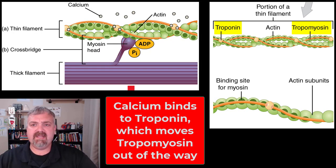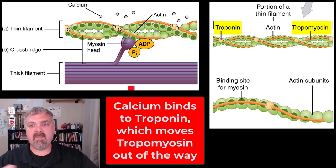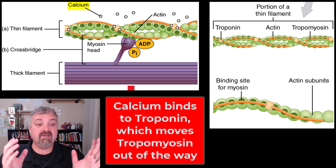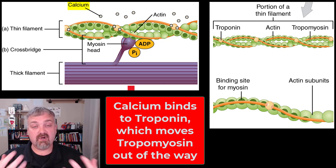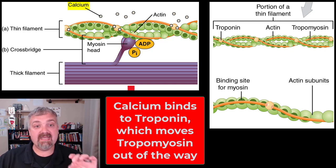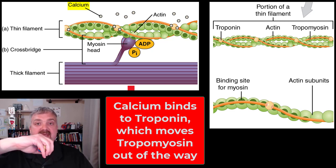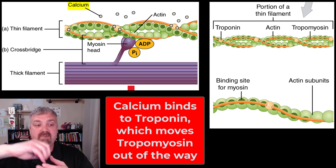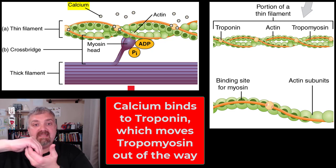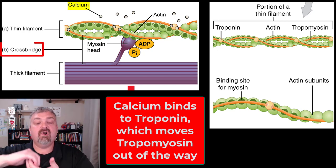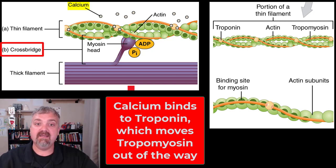Troponin and tropomyosin form what are called the shielding proteins. This process cannot happen as long as tropomyosin is in the way — troponin holds tropomyosin there, but troponin also has calcium receptors. Calcium is dumped out of the sarcoplasmic reticulum into the muscle fiber, and that calcium binds onto troponin, which moves tropomyosin out of the way so myosin can now grab onto actin. Right now actin cannot bind to myosin because tropomyosin is in the way; calcium binds to troponin, moves tropomyosin aside, and the myosin head attaches to actin — that's called cross-bridge formation. If a cross bridge between actin and myosin doesn't form, you cannot have muscle contraction.